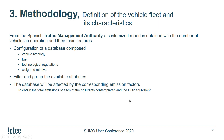Next is the definition of the vehicle fleet and its characteristics. From the Spanish traffic management authority, a customized report is obtained with the number of vehicles in operation and their main features. A database is configured with parameters like vehicle topology, fuel type, technological regulations, and weight. After filtering and grouping by different attributes, the database is applied with corresponding emission factors to obtain total emissions for each pollutant contemplated, including CO2 equivalent.